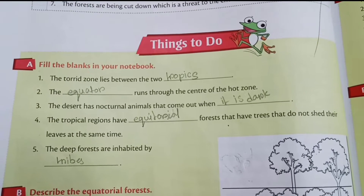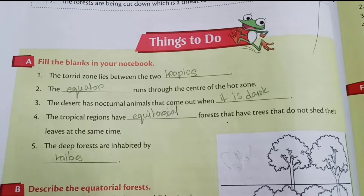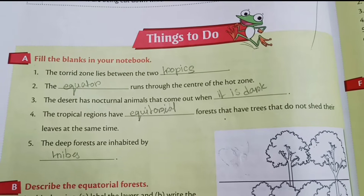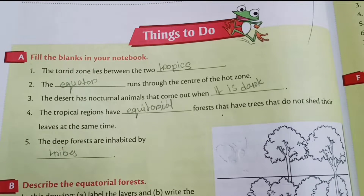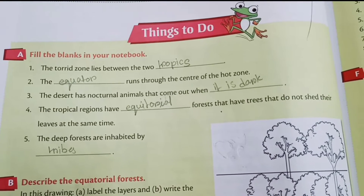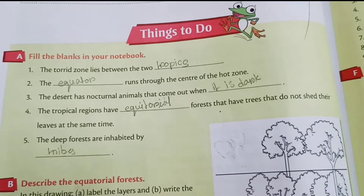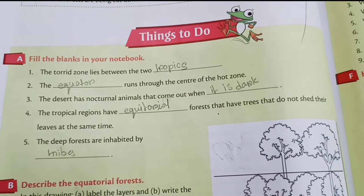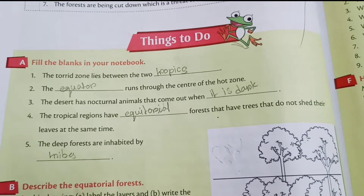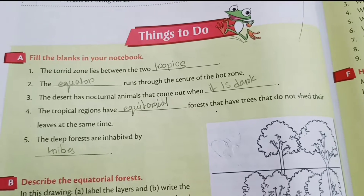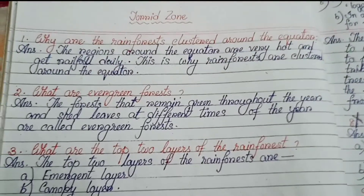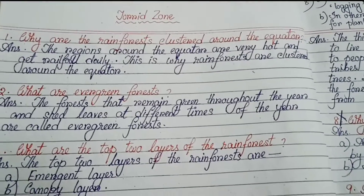Number 1: The torrid zone lies between the two tropics. Number 2: The equator runs through the center of the hot zone. Number 3: The desert has nocturnal animals that come out when it is dark. Number 4: The tropical regions have equatorial forests that have trees that do not shed their leaves at the same time. Number 5: The deep forests are inhabited by tribes.